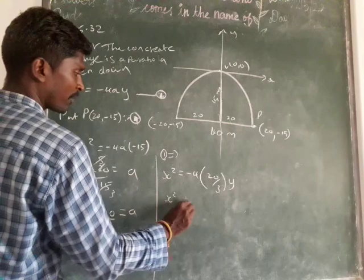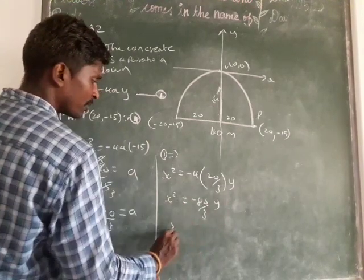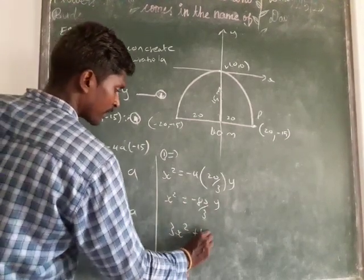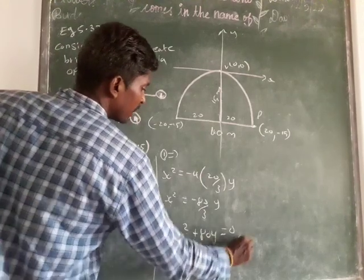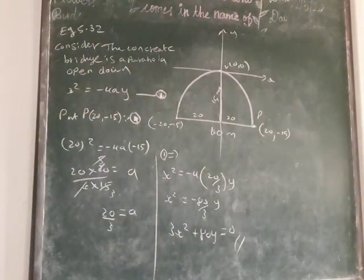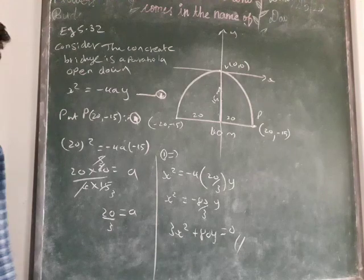Now multiply, x² = -80/3 y. So 3x² + 80y = 0. This is the required equation of the concrete bridge. 3x² + 80y = 0.